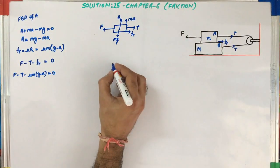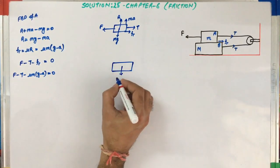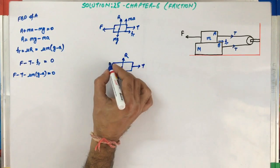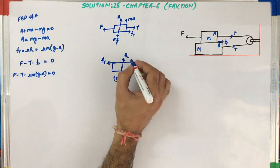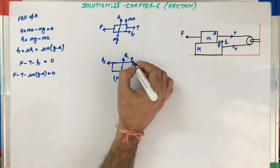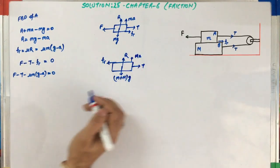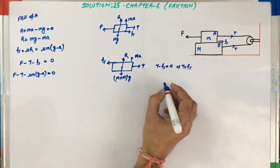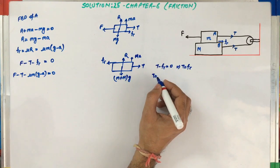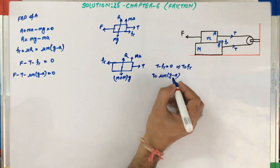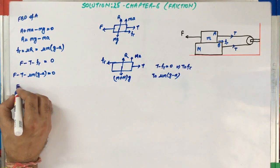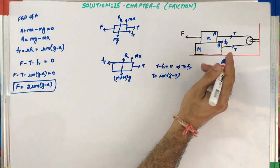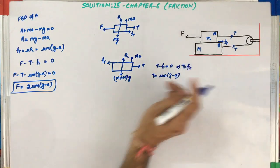From the FBD of block B: the total weight (m plus M)g acts downward, the reaction force is upward, T acts in the right-hand direction, frictional force fr acts on the upper surface, and the pseudo force m·a acts upward. For the horizontal forces: T minus fr equals zero, so T equals fr equals mu·m·(g minus a). Putting this value of T back into the equation for block A gives F equals 2·mu·m·(g minus a). This is the maximum force that can be applied on block A such that the system remains in equilibrium — the solution for case one.